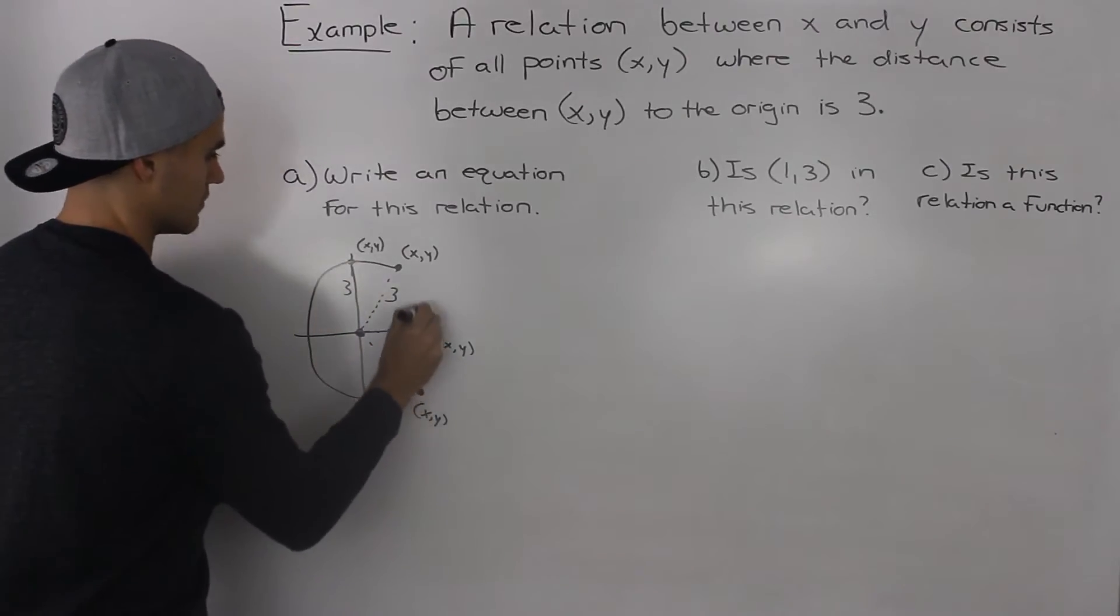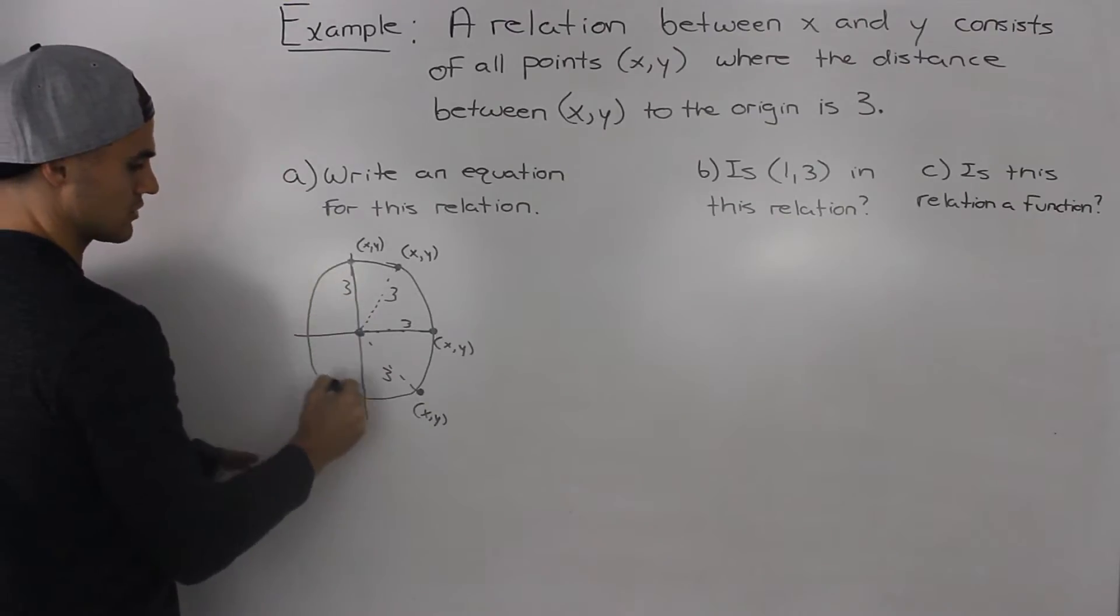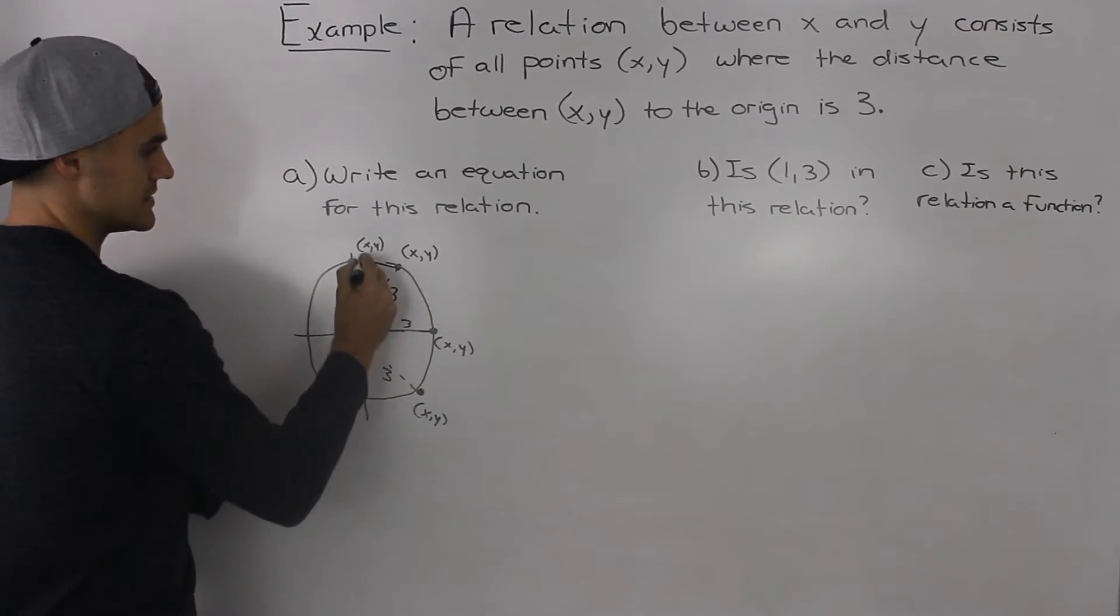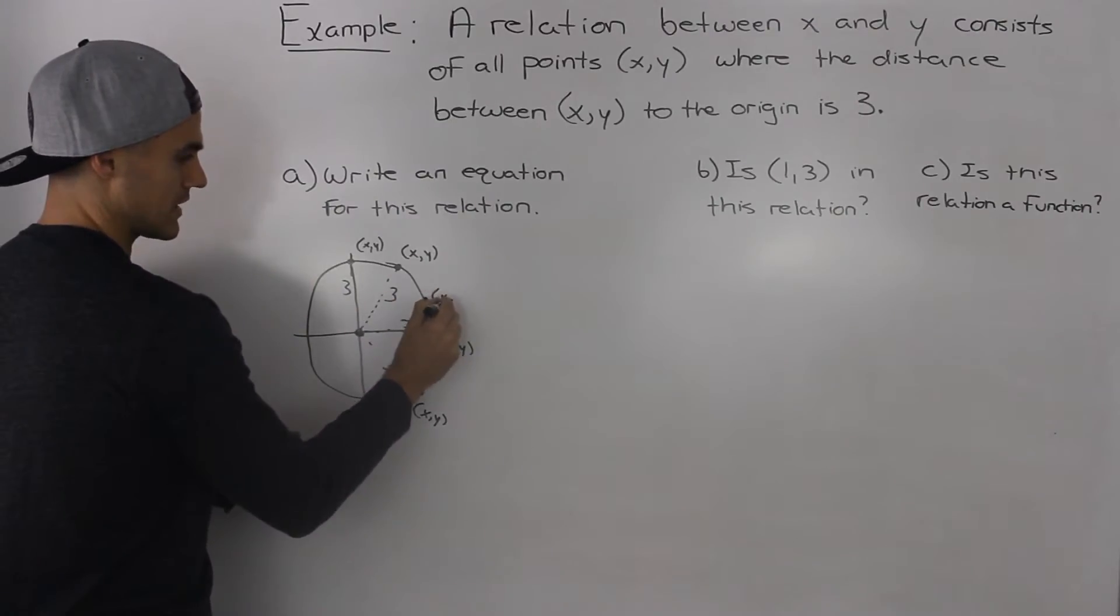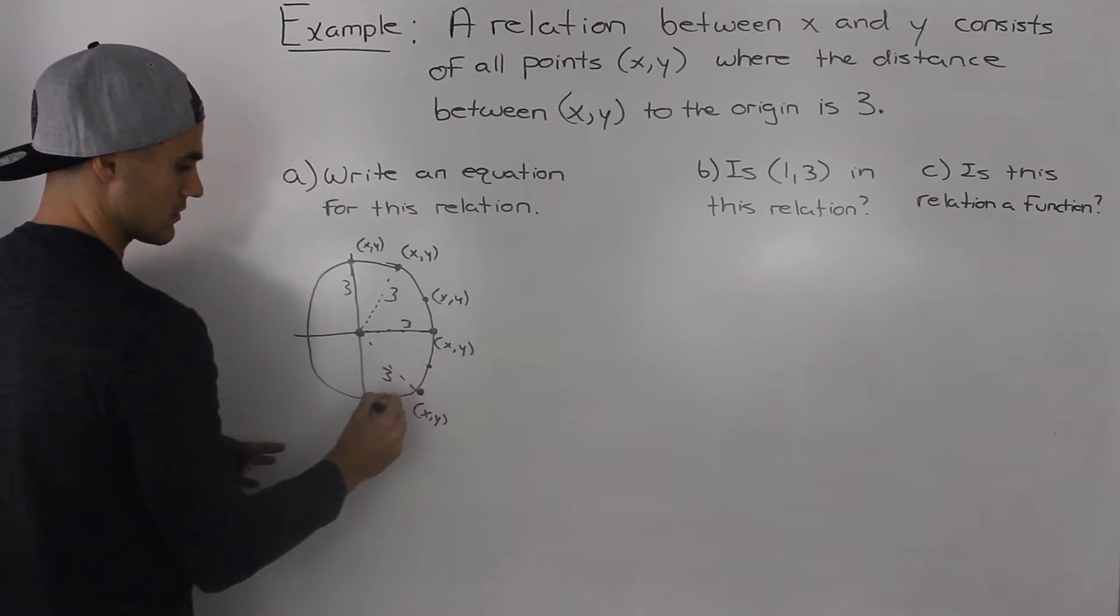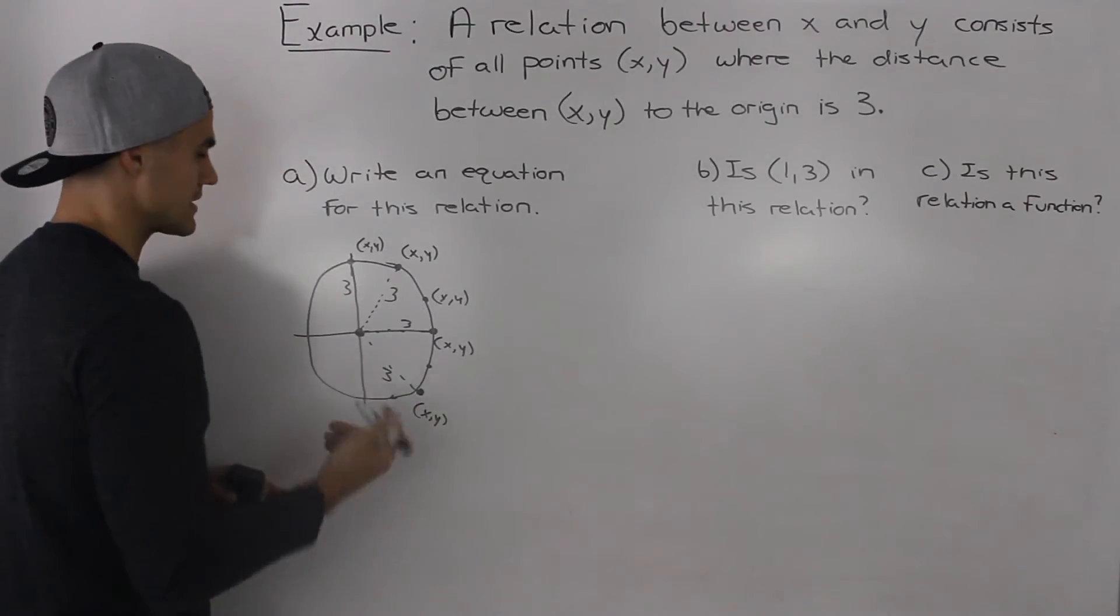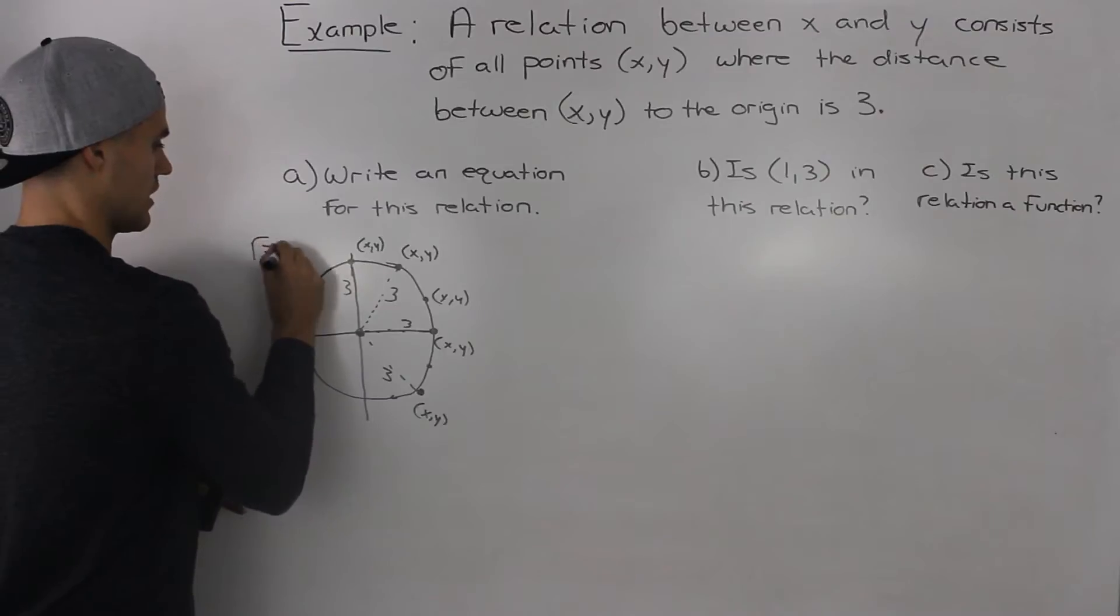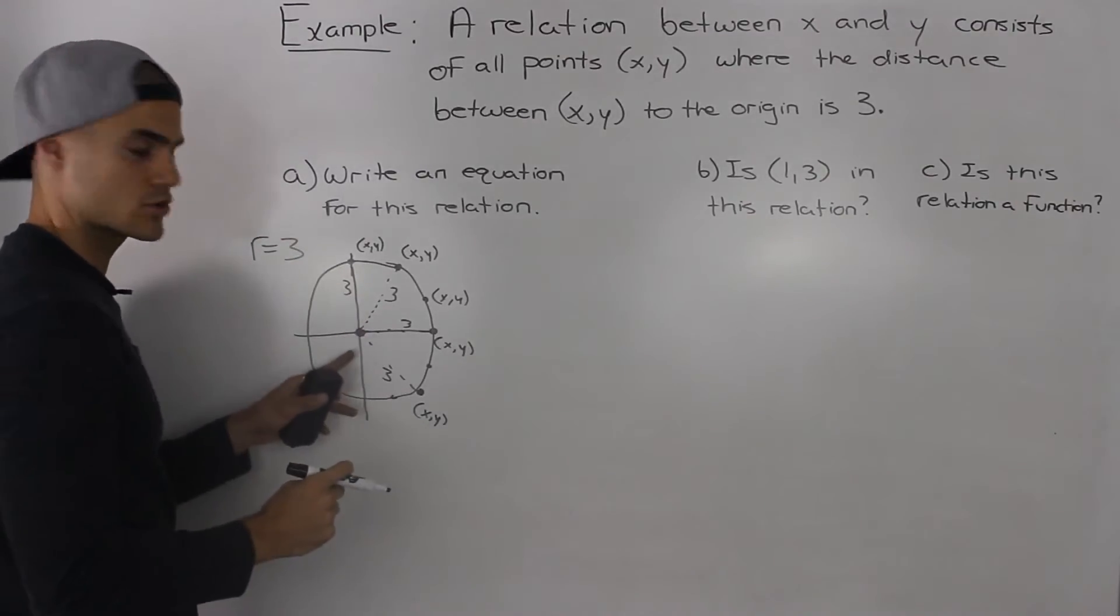So it has to be 3 all the way around. And any point here on the circle has to have a distance from the origin to that point. So this can be (x, y) here, here, anywhere on the circle. It has to have a distance of 3. Meaning that the radius of this circle is 3, and it has a center at the origin.